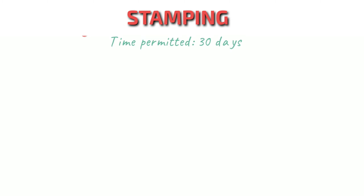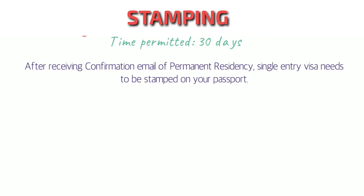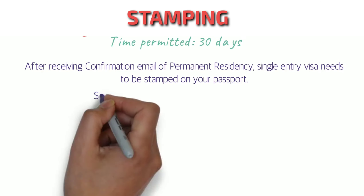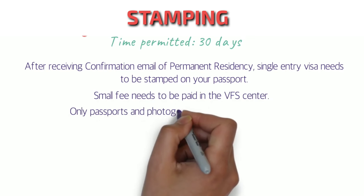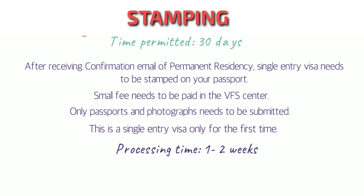The final step is Stamping. Once you receive the confirmation email from IRCC, you have a 30-day time frame to submit a few documents to the VFS office. After receiving the confirmation email for your permanent residency, a single-entry visa will be stamped in your passport, which is used as a single entry to Canada. You also pay a small fee to the VFS center for passport courier. Only the passport and a few photographs need to be submitted, along with a printout of the confirmation email. Once you enter Canada, the single-entry visa becomes invalid and you will be provided a permanent residency document. After 2 to 3 months, you will receive your PR card for future travel. The processing time for this step is 1 to 2 weeks.